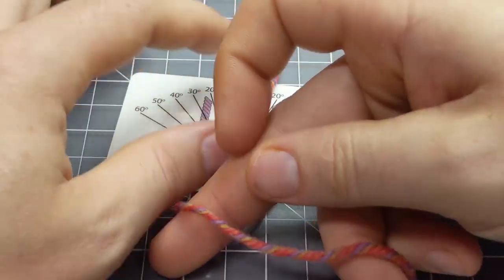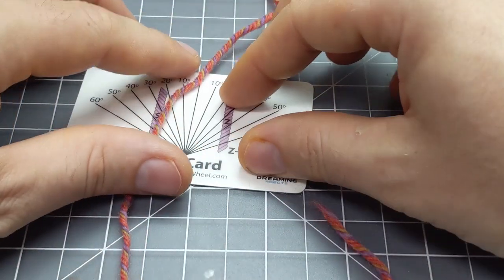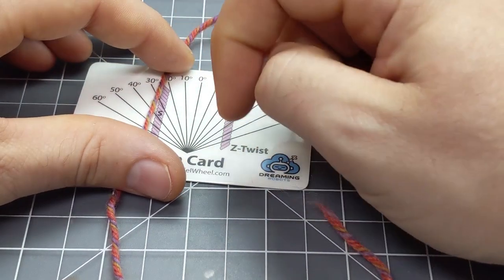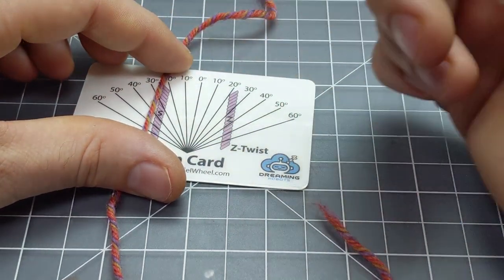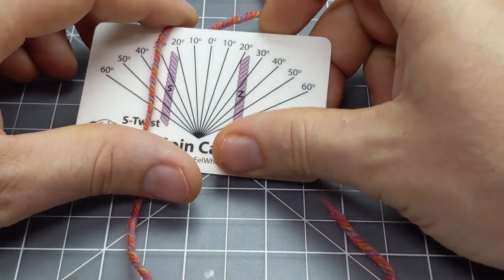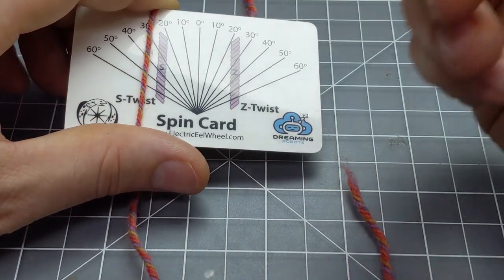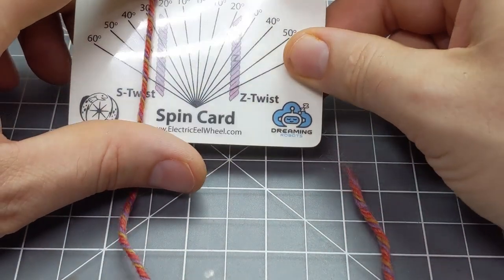And even if you flip over the yarn and measure it from the other direction, it's still going to have the same slant. So again, it's in this direction. So it's S-twist yarn. And that's determined by the direction your spinning wheel is going when you spin the yarn.